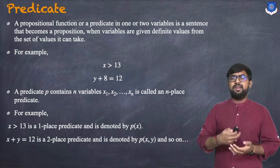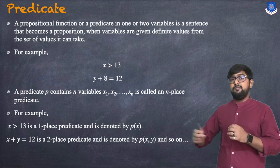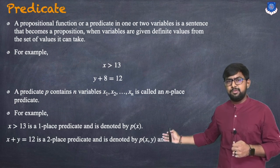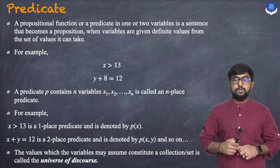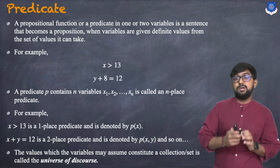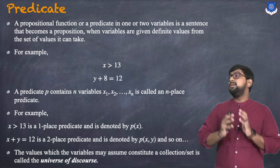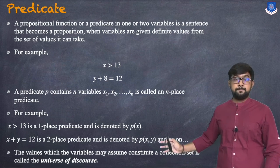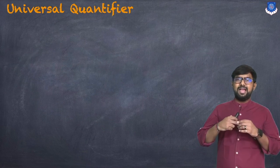Whenever we have one variable we denote it by P(x); whenever we have two variables we denote it by P(x, y), and so on. The values which the variables may assume constitute a collection or set called the universe of discourse.